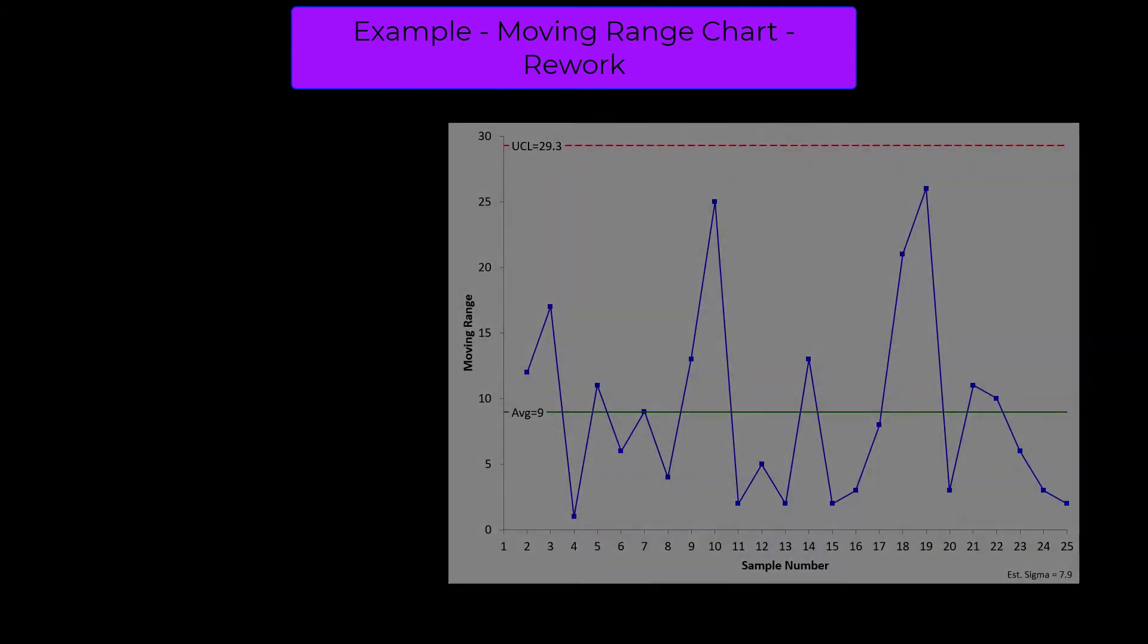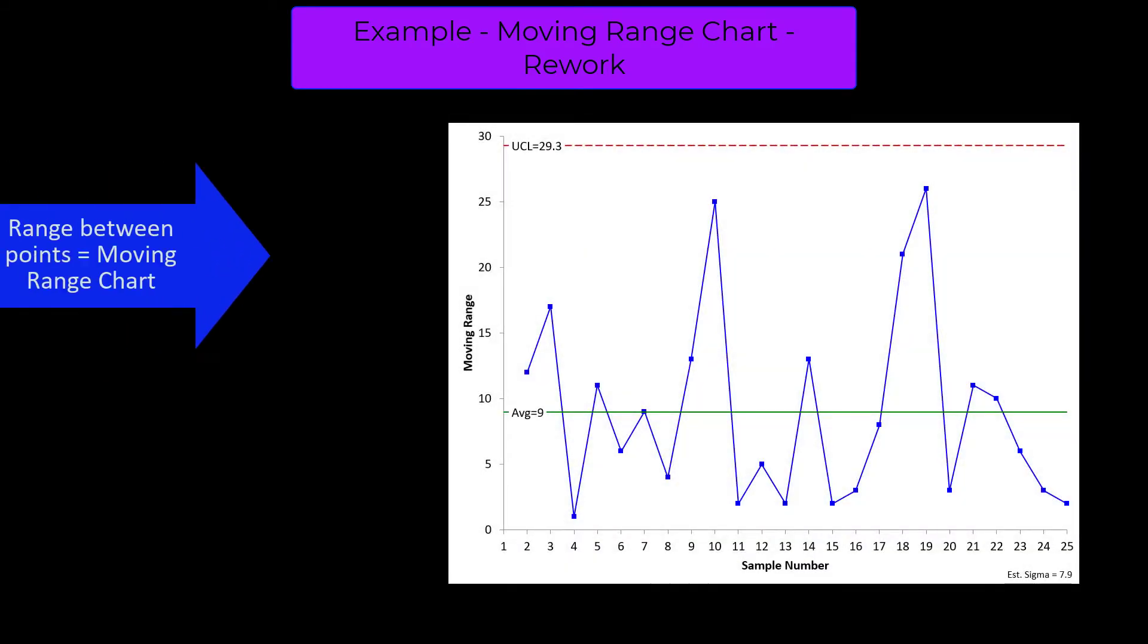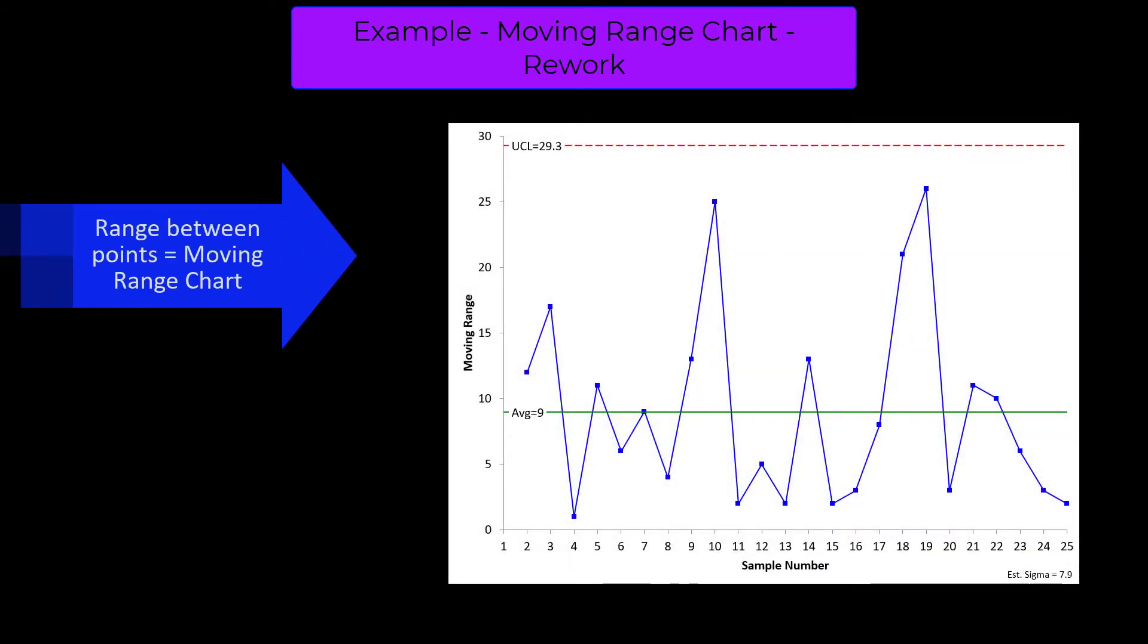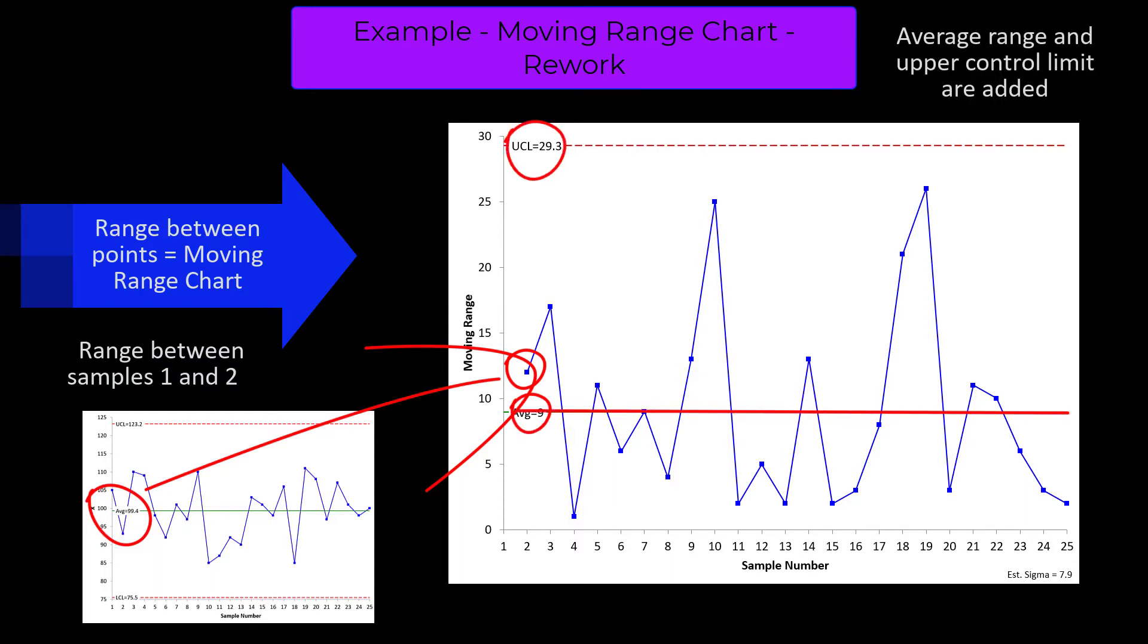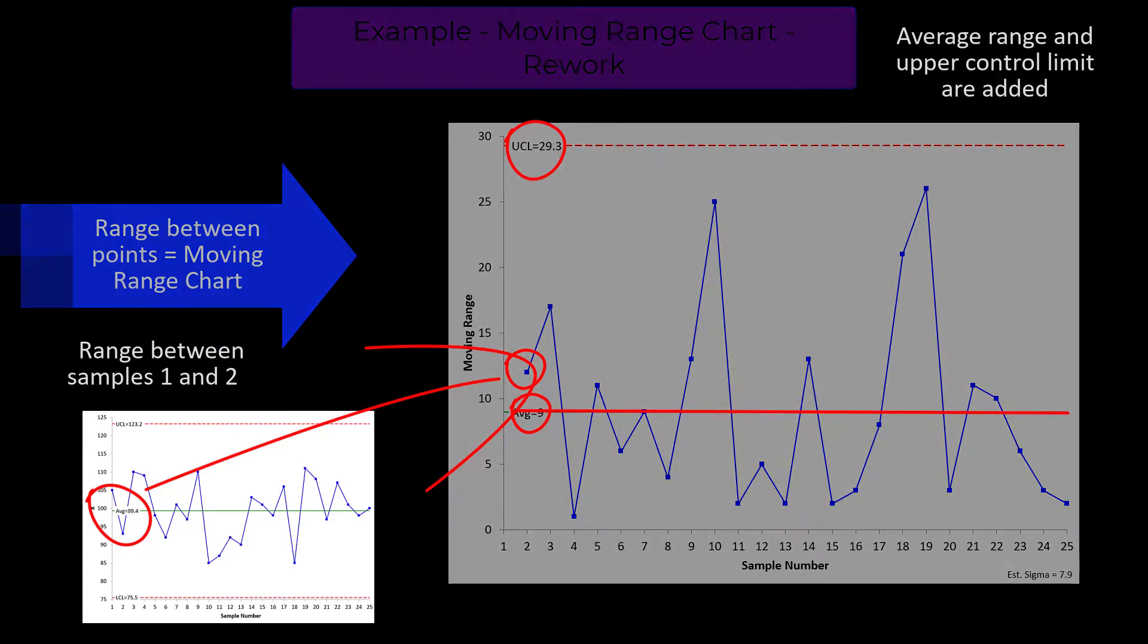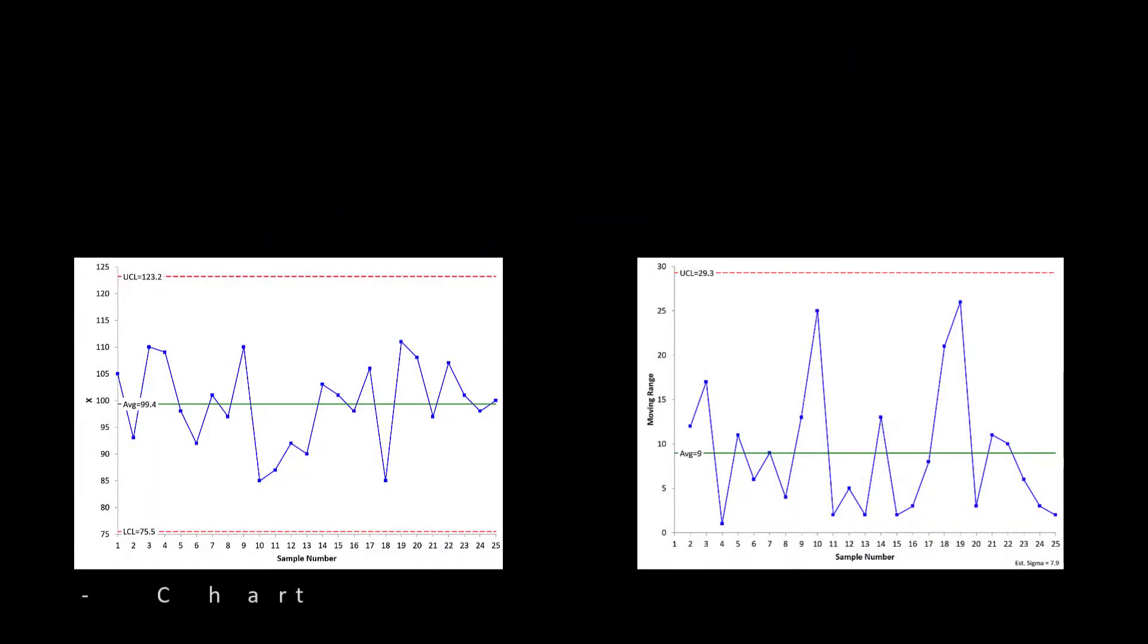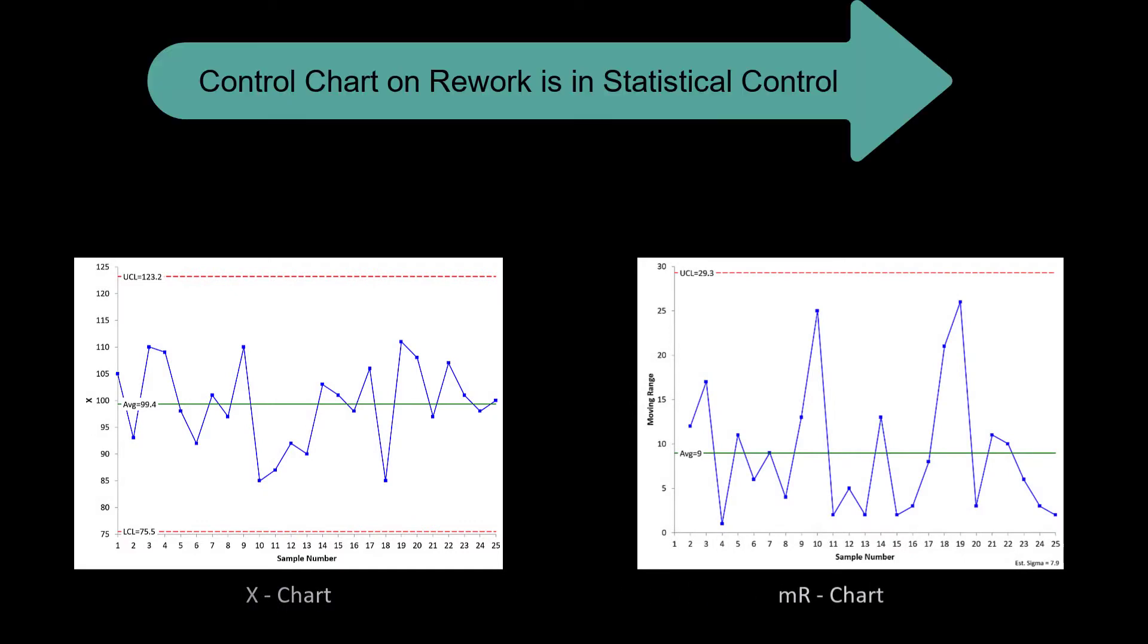The moving range chart, on the other hand, is going to track the range between consecutive samples, the moving range between consecutive samples. So the range between samples 1 and 2 is the first moving range. You had 105 and 93, so that value is 12, and you do that over time. And once you have enough data, you calculate your average, and you calculate your upper control limit and add those to the chart. And there is no lower control limit with a moving range chart. So then you're ready to see if it's in control.